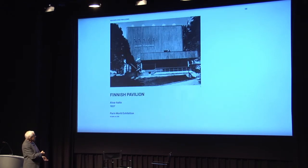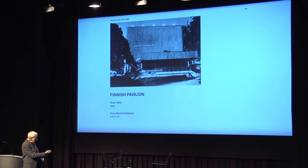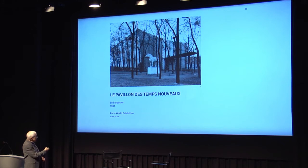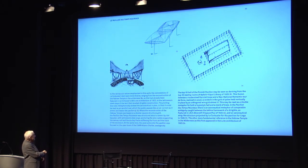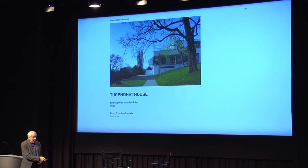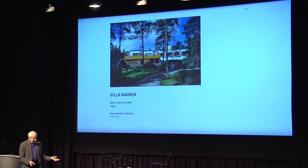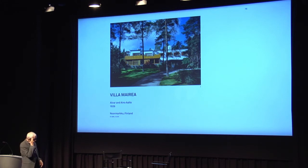And that brings me to the end of the whole damn thing. There is the comparison of Aalto's 1937 pavilion to Le Corbusier's pavilion, and then the Tugendhat House versus the Villa Mairea — the Tugendhat is 1930, the Villa Mairea is 1939. And the book goes on like that. I've been talking more than an hour, so in order not to drive everybody nuts, I think we should have a discussion.